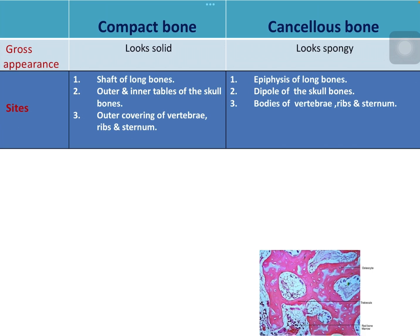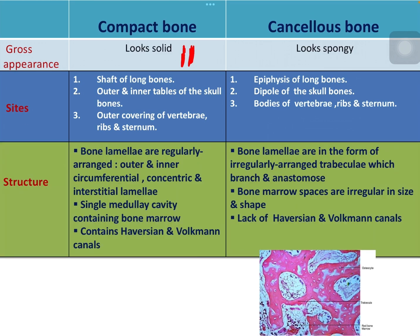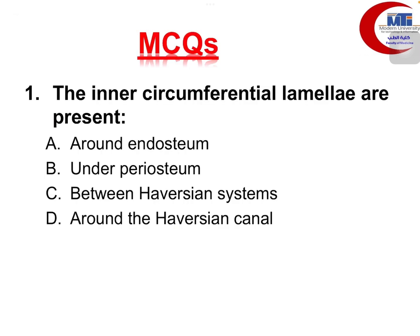As a comparison: compact bone always looks like a solid structure, as in the long bone, while cancellous bone looks spongy because of its shape as a network of bone trabeculae. An important point is that cancellous bone does not have Haversian or Volkmann's canals, because it is formed of bone trabeculae enclosing osteocytes inside lacunae, and the medullary cavities containing bone marrow tissue lie between the trabecular network.